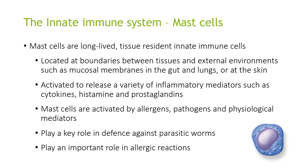The next type we will look at is mast cells. These are long-lived tissue-resident innate immune cells. They are located at the boundaries between tissues and the external environment, such as mucosal membranes in the gut and lungs, or at the skin. They are stimulated to release a variety of inflammatory mediators such as cytokines, histamine and prostaglandins. Mast cells are activated by allergens, pathogens and physiological mediators, and have important roles in defence against parasitic worms and allergic reactions.